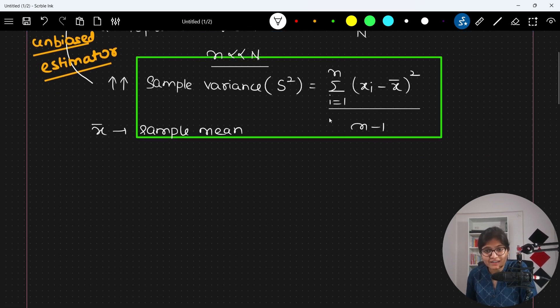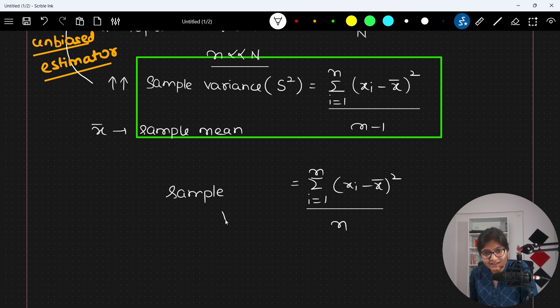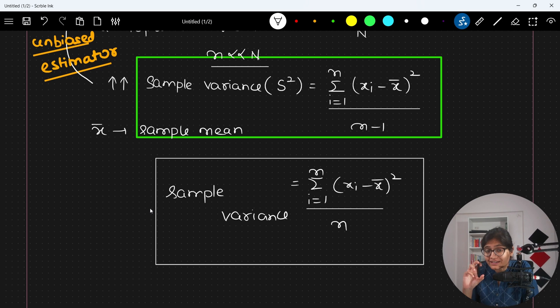But when you are dividing it by N, which is summation of i equals to 1 to N, xi minus x bar whole square divided by small N, in this particular case, when you will be having this kind of a sample variance, what is happening actually, here you will observe that you are getting a value which is somehow biased and is not approximately equal to the population variance. So this is something which we called as a biased estimator.